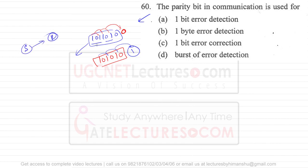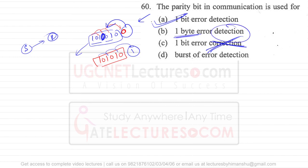If the receiver receives the data and one bit has been changed due to an error, the parity bit helps identify that an error occurred. Parity bit is used for error detection, not error correction. It provides one-bit error detection, not one-byte error detection. So option A is the correct answer for question number 60.